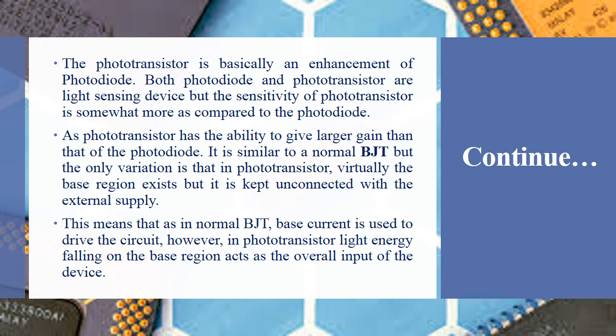In a normal BJT, the base current drives the flow of electrons from the collector to the emitter. However, in a phototransistor, the base is not connected to an external supply. Instead, light energy falling on the base region acts as the overall input of the device. As we studied in BJT, when no voltage is given to the base region, electron flow between collector and emitter is not possible.